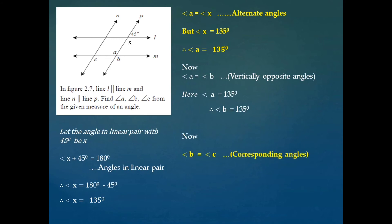To find the measure of angle C, we use the next property: angle B is congruent with angle C, as these two are corresponding angles, because line N and line P are parallel and M is their transversal. So these two corresponding angles must be congruent. Since angle B is 135 degrees, angle C is also 135 degrees.